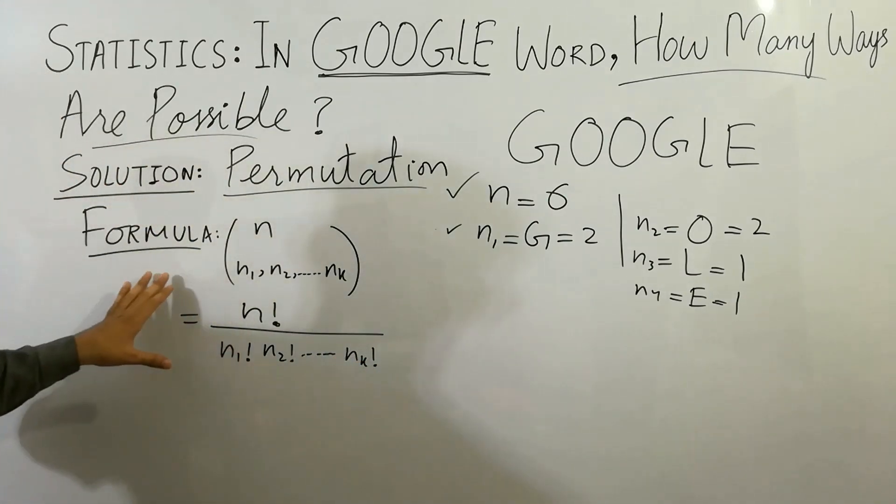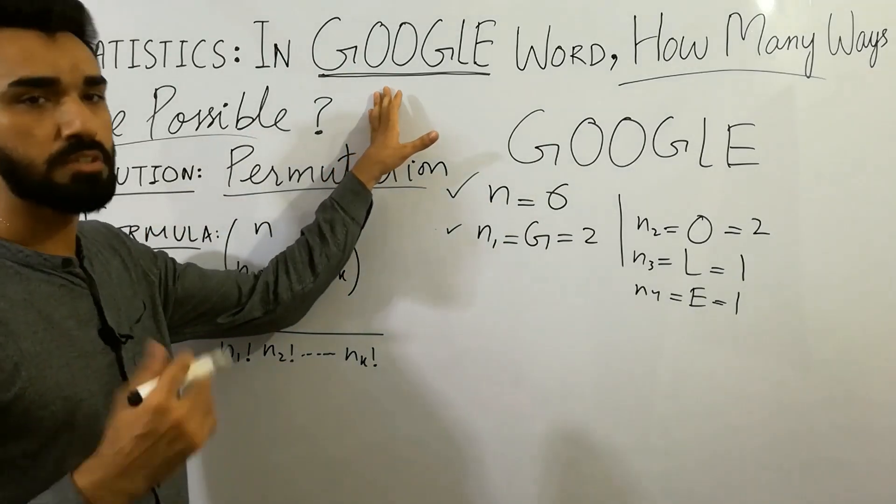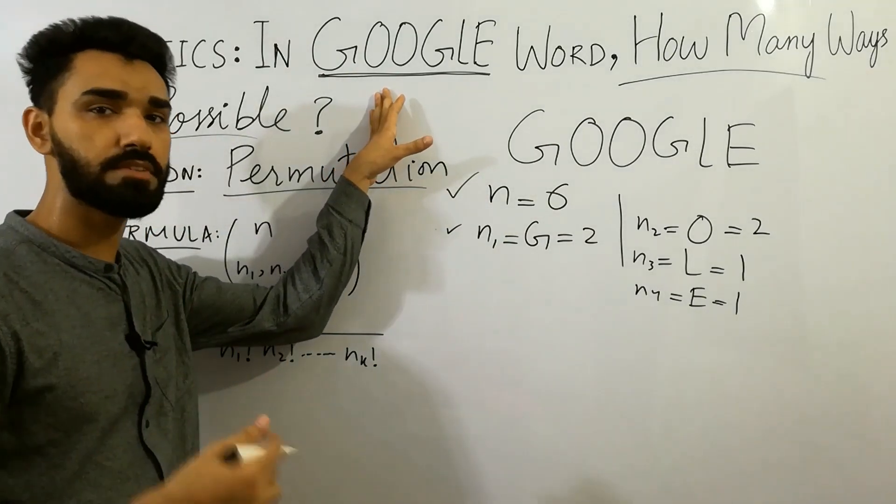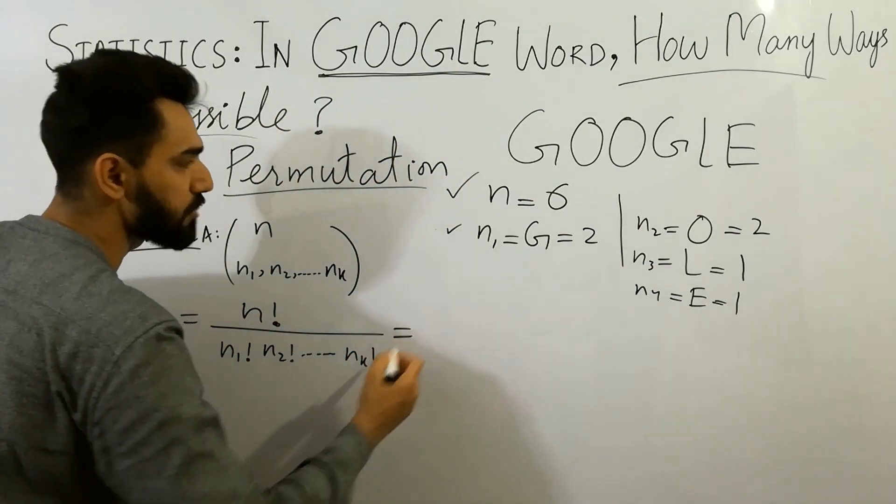This formula applies only in which, for Google Word, you can say that six letter word, for any word, you can also use this formula. And now, going to calculate.